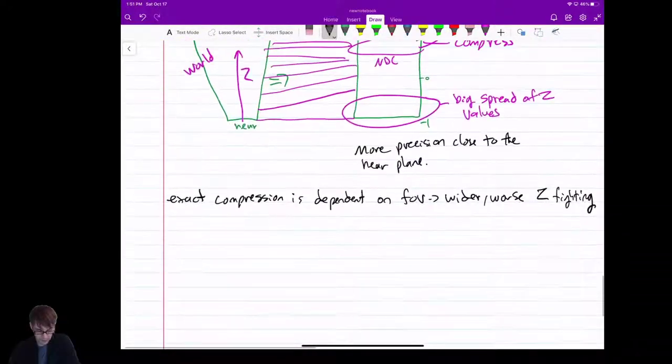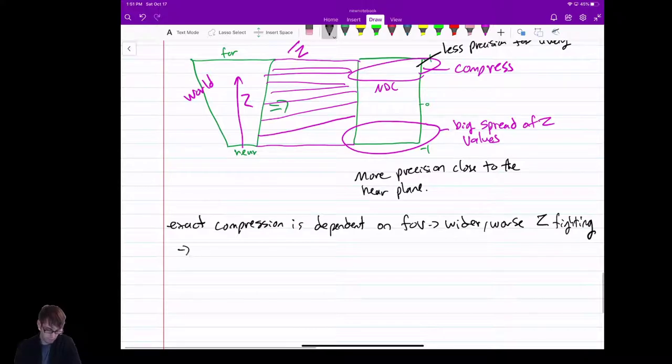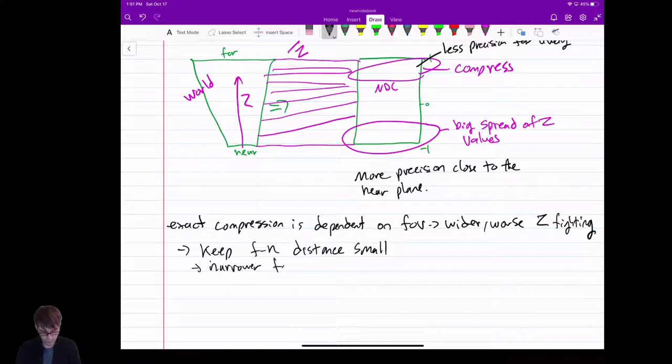You keep your far minus near distance small if you can. You keep that small and you maintain a narrower as you can field of view. If you get to more advanced you get some people doing multiple stage rendering if you have really deep scenes they can do multiple stage and things like that but yeah Z buffering is an issue.